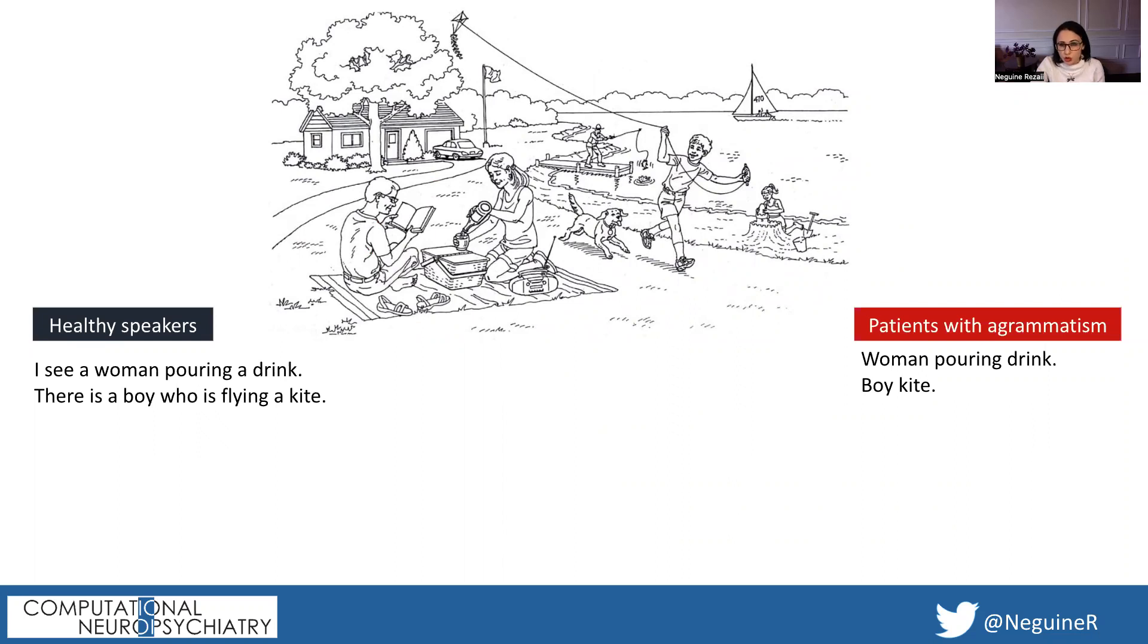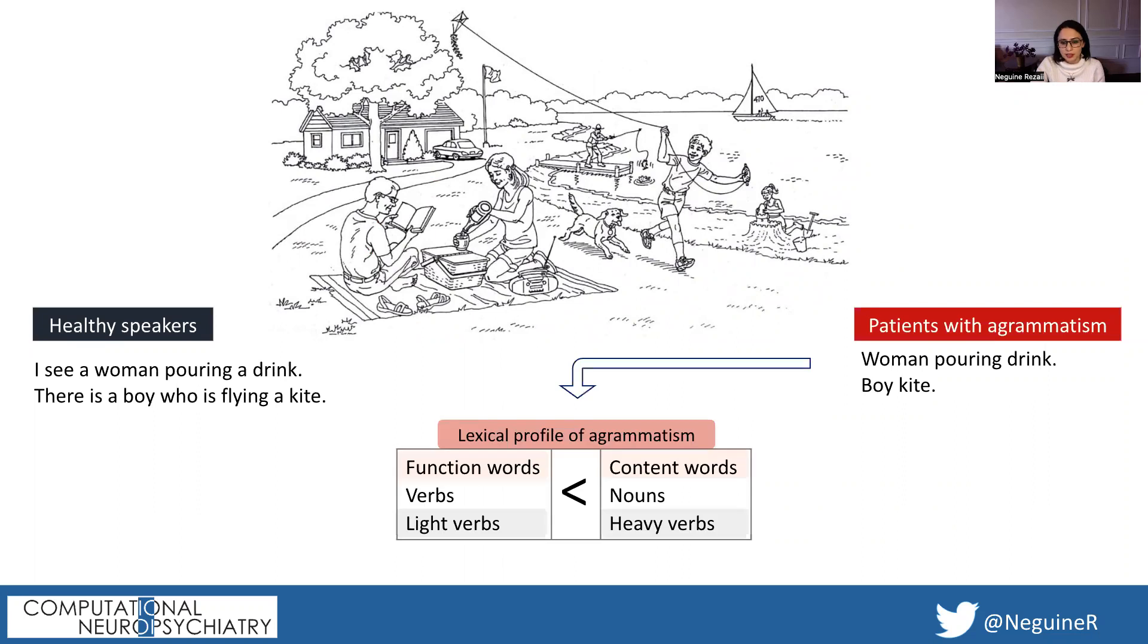First of all, these sentences are very short. They're also associated with a specific lexical profile. These patients are using less function words than content words. Function words would be words like "the," "of," prepositions. And they're using less verbs than nouns. These patients are also using less light verbs than heavy verbs. A light verb would be a verb like "be," "go," "have" versus a heavy verb like "gore."